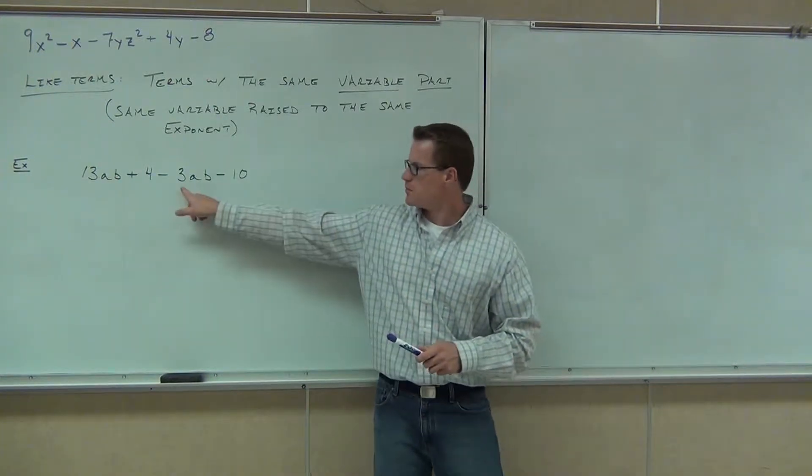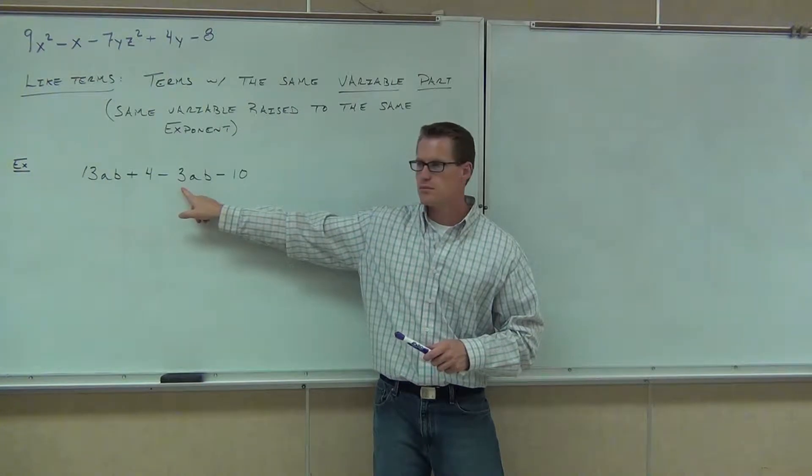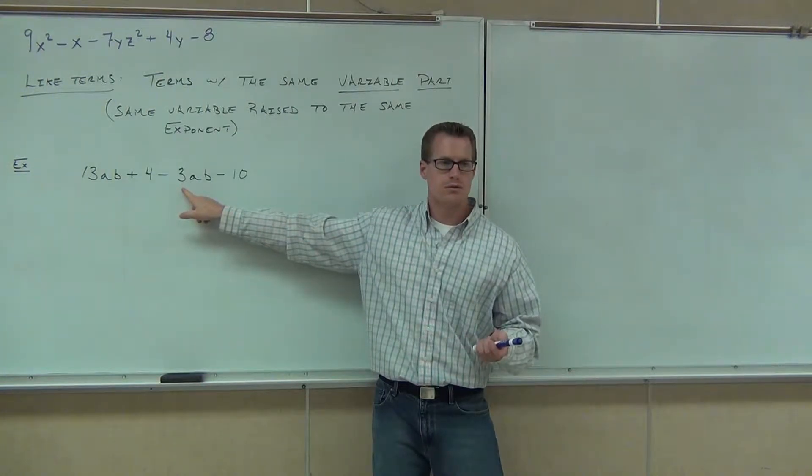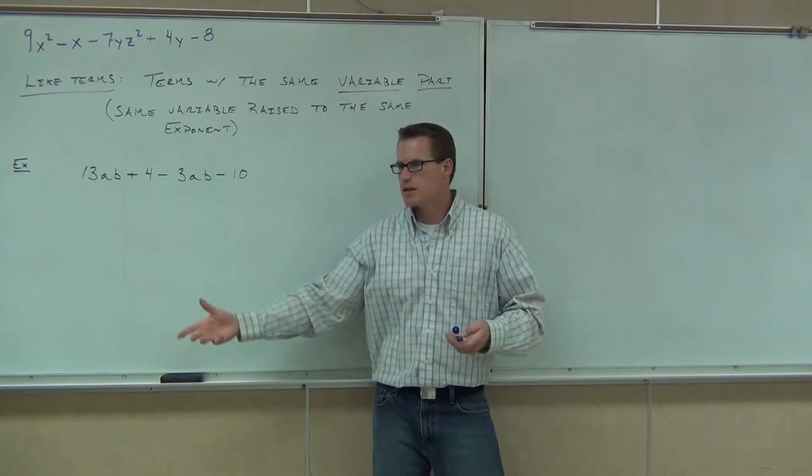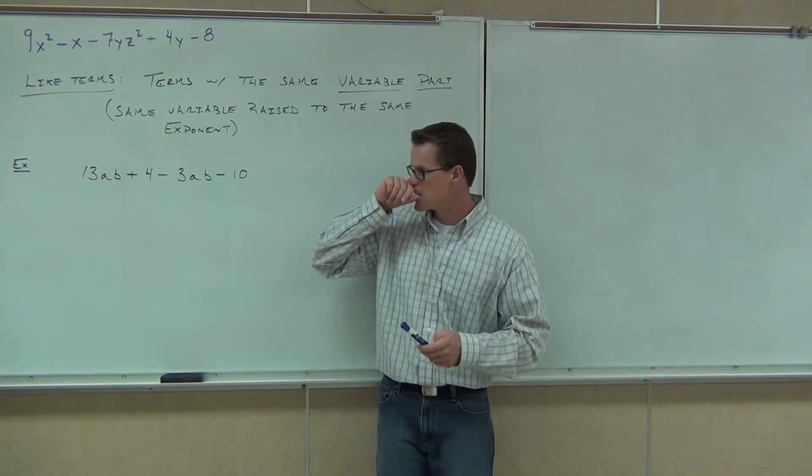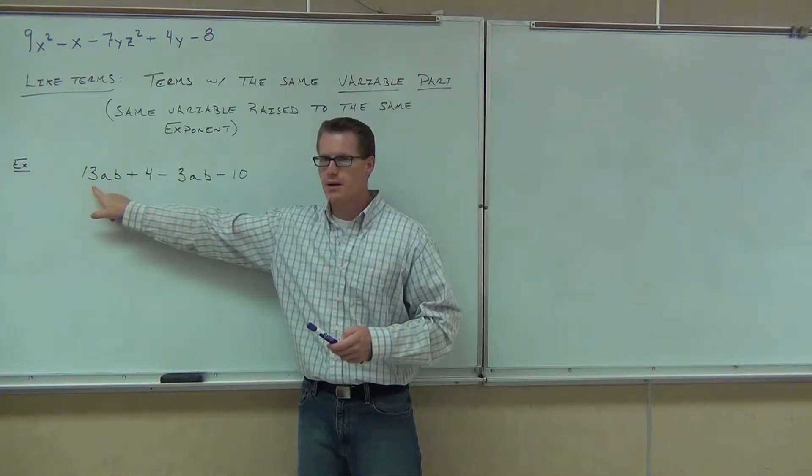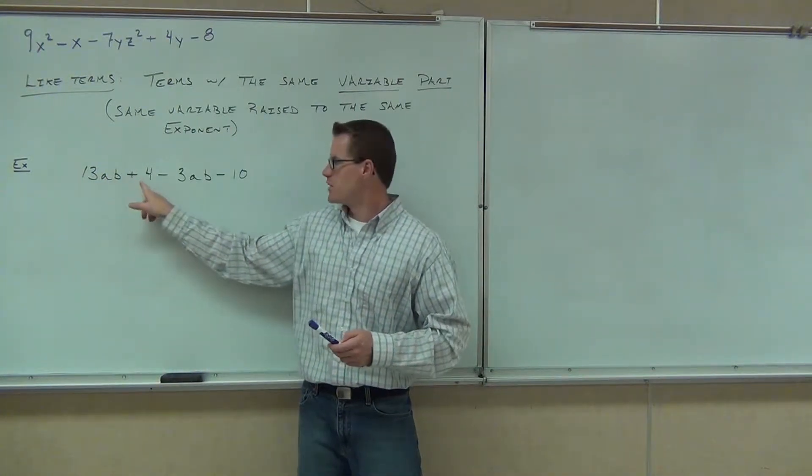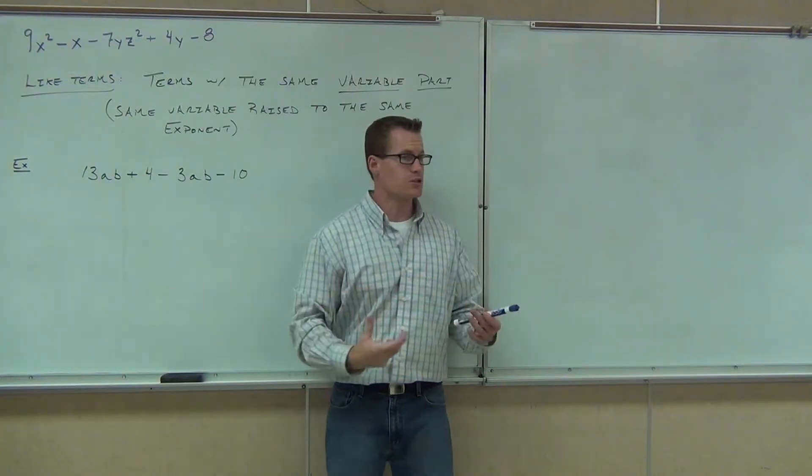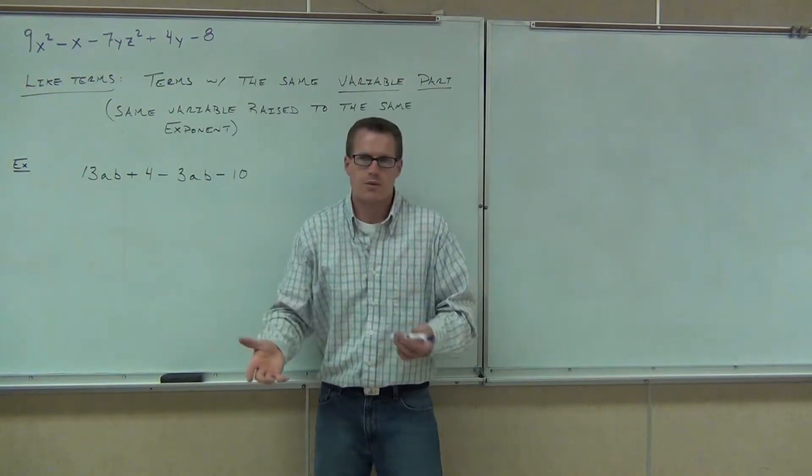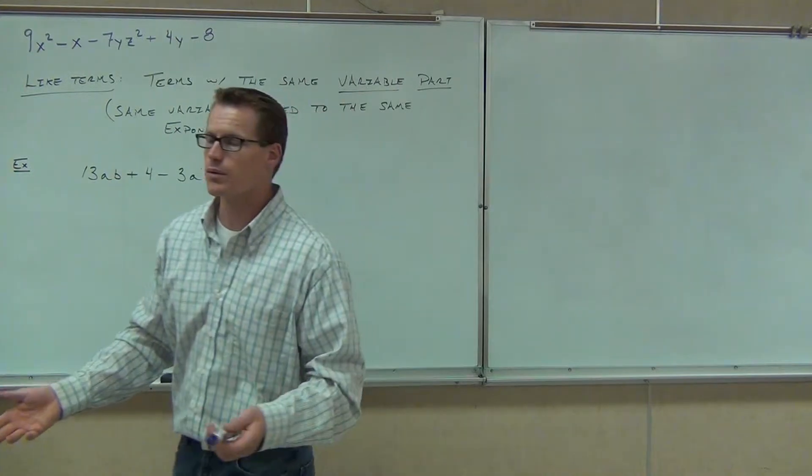What's the coefficient of this term? Negative three. You've got to say the negative three. We've got negative three there. How about the coefficient of this term? 13. Good. By the way, these do not have coefficients since they're constants. Those are the constant ones. You don't call them a coefficient. There's no variable to go along with that.